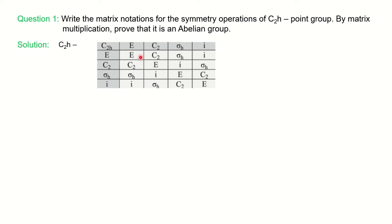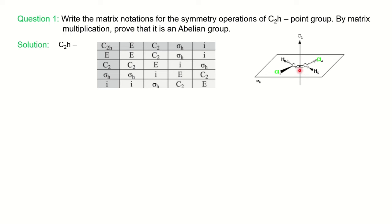You write the first row and column with all symmetry operations and fill the rest with binary products. C2 × C2 gives E; C2 × σH gives I; C2 × I gives σH. All rows and columns contain each symmetry operation exactly once. Notably, all diagonal elements are E. The example molecule is trans-dichloroethylene, which has a C2 axis along Z, a horizontal molecular plane σH (XY plane), and an inversion center.